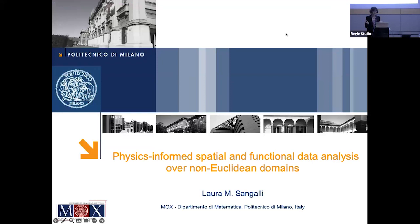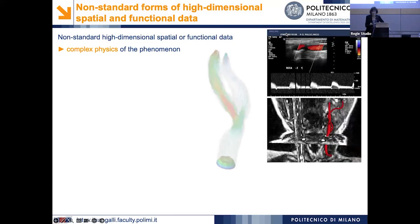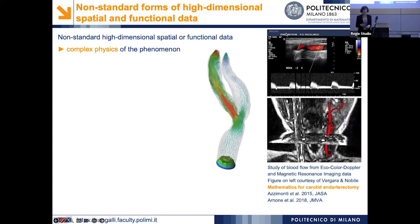These are physics-informed methods for spatial and for functional data analysis, observed over possibly non-Euclidean domains. In particular, we are interested in some non-standard forms of spatial and functional data that display non-Euclidean variation.